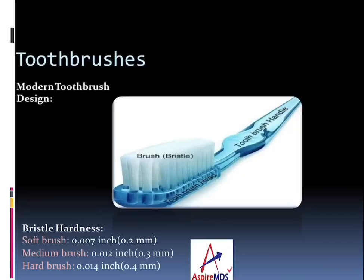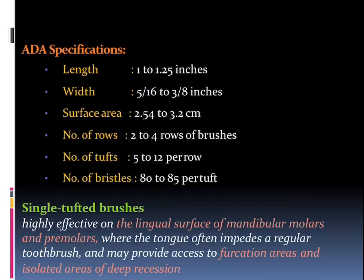The toothbrush can be classified based on the bristle present. A soft bristle brush has about 0.007 inch or about 0.2 mm bristles — this can be asked in an MCQ. A medium bristle brush has about 0.012 inch, that is about 0.3 mm, and a hard bristle brush has about 0.014 inches, that is about 0.4 mm in diameter.